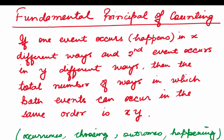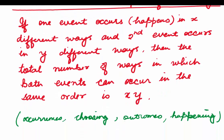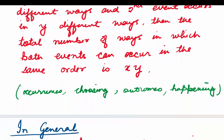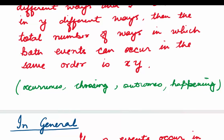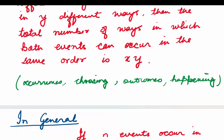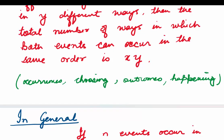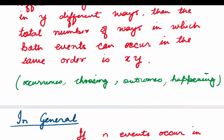The principle states: if one event occurs in x different ways and the second event occurs in y different ways, then the total number of ways in which both events can occur in the same order is x times y — that is, they are multiplied. You can use many different words in place of 'occurs,' such as choose, choosing, outcomes, or happenings.